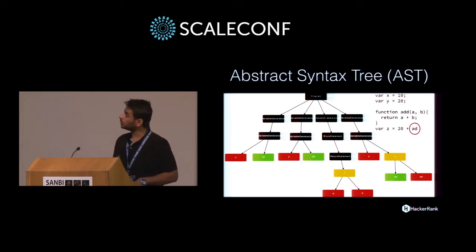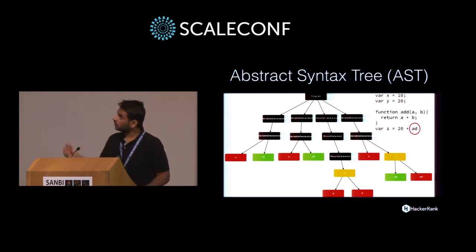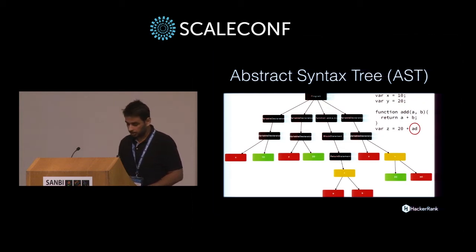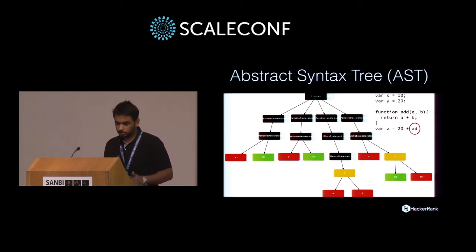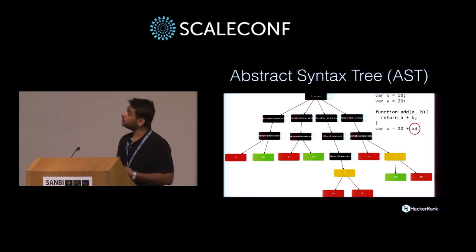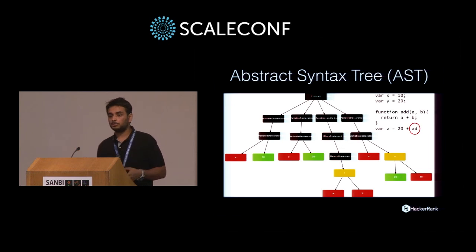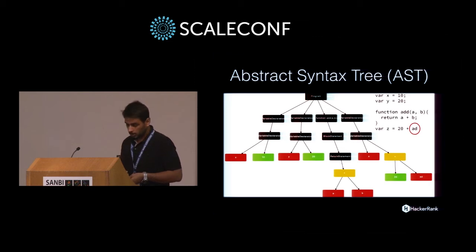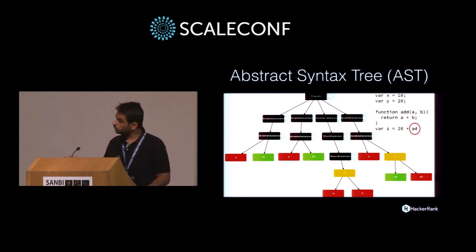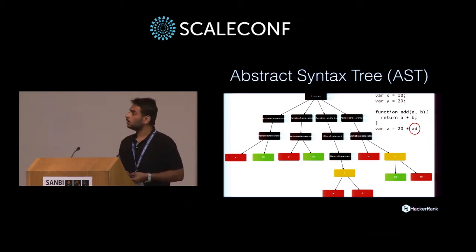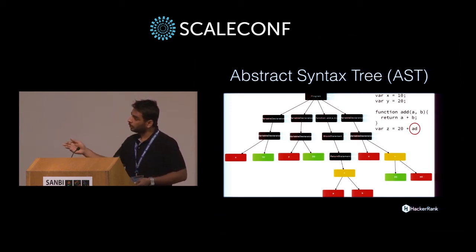Here is what an AST looks like. On the right side you can see a JavaScript snippet. The identifier 'ad' is incomplete here. If you try to parse this with a strict parser, it will raise an error. But using an error-tolerant parser, you get some AST, and you can loop over the code to get what needs to be completed at that section.